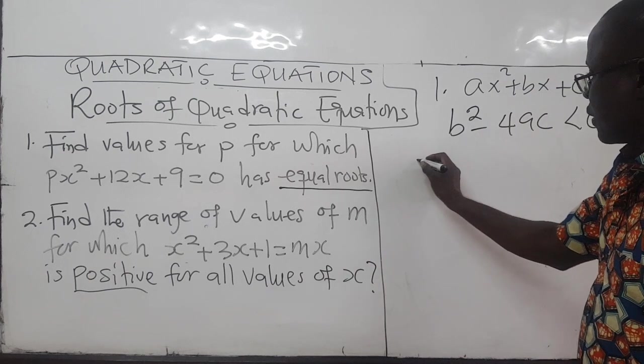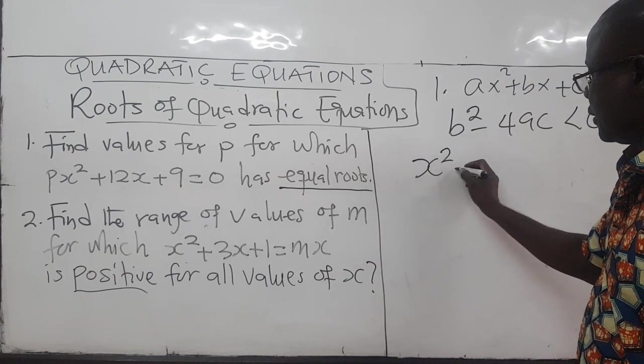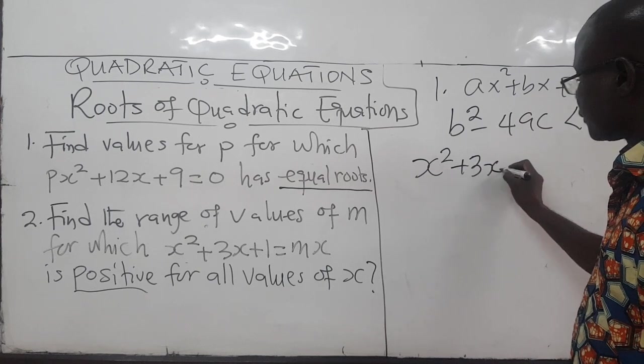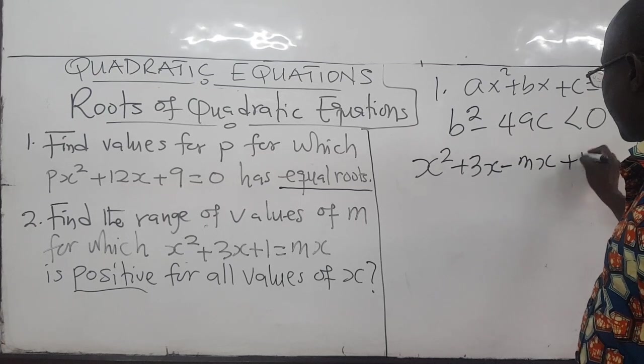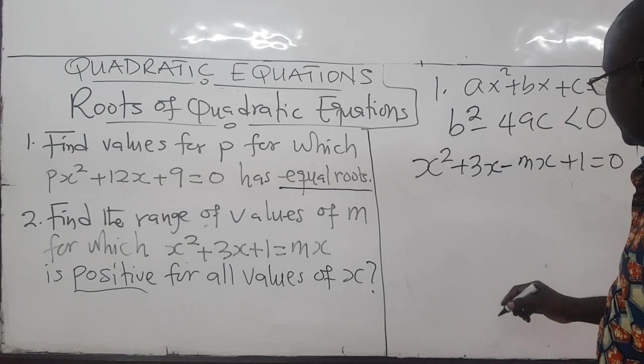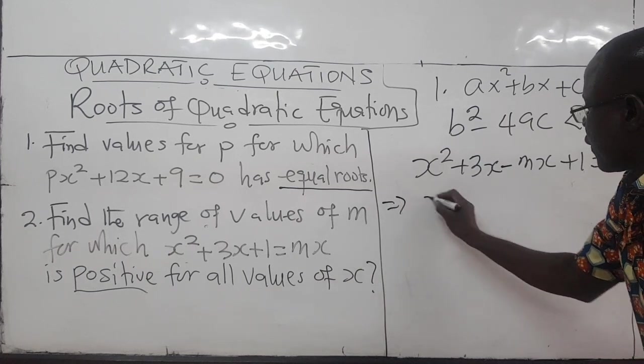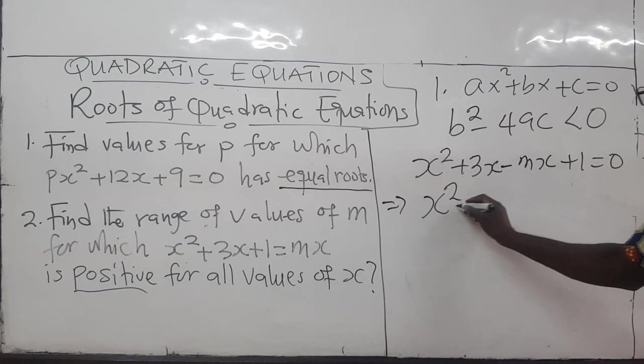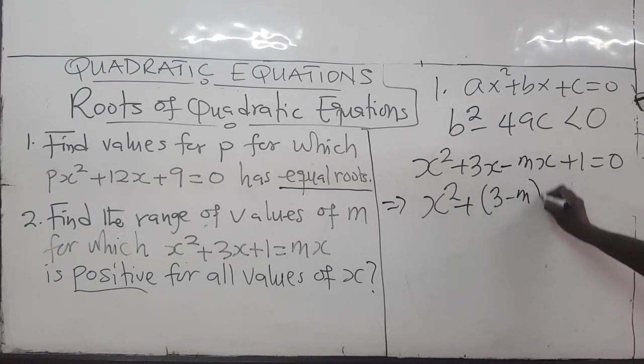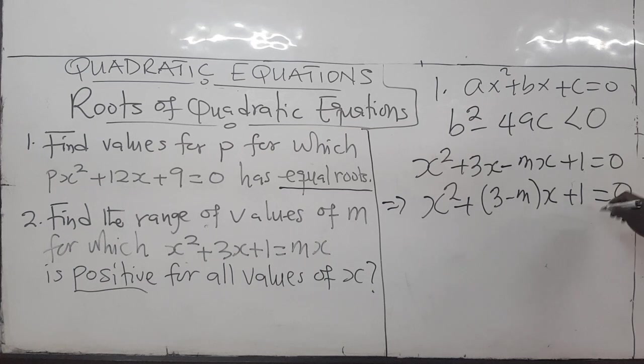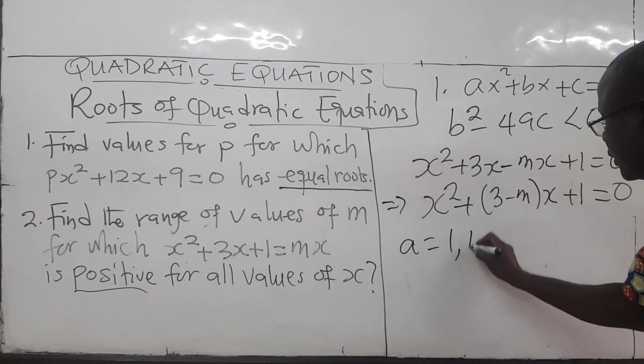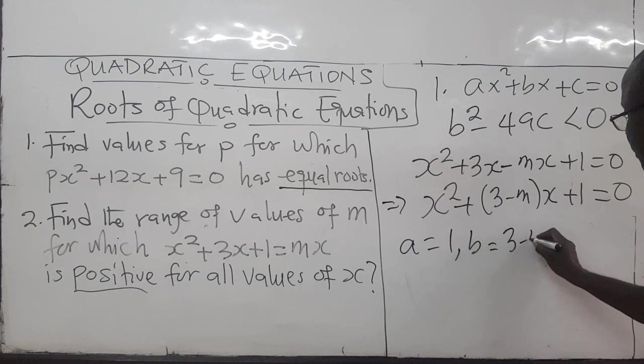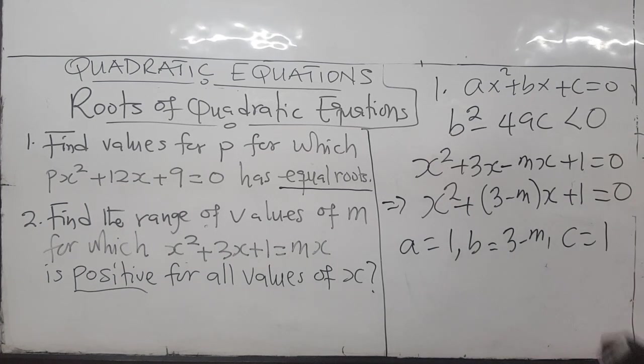In this case, we need to rewrite this as a quadratic equation. So we have x squared plus 3x minus Mx plus 1 is equal to zero. And this can also be rewritten as x squared, I'm going to factorize x out. So 3 minus M times x plus 1 is equal to zero. So now we know our A is 1, the coefficient of x squared. B is this guy, 3 minus M. And C is just 1.